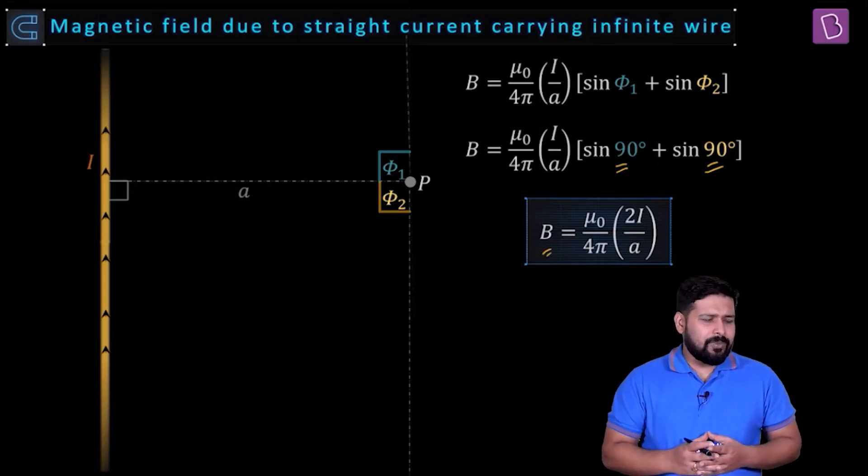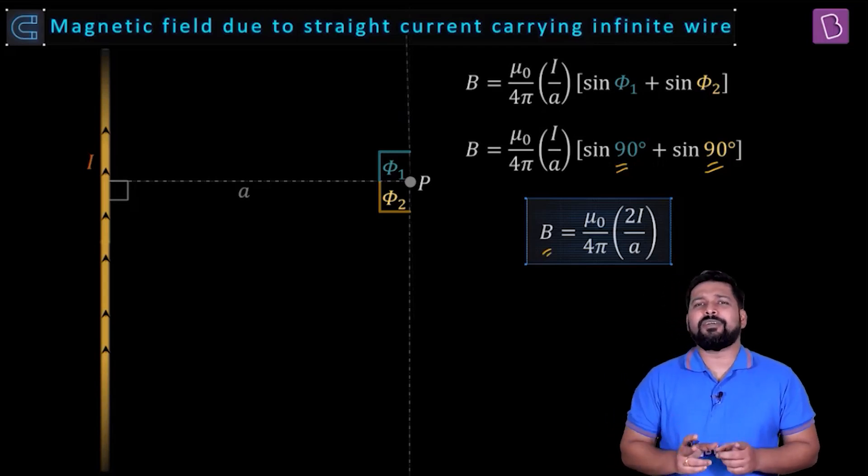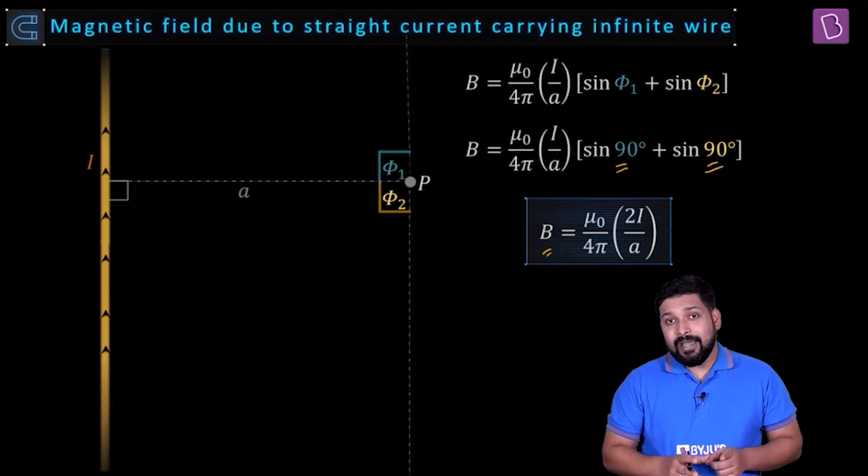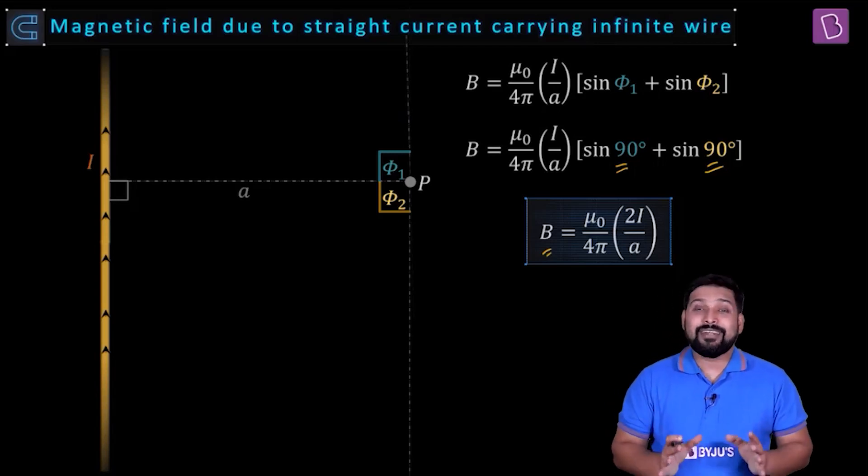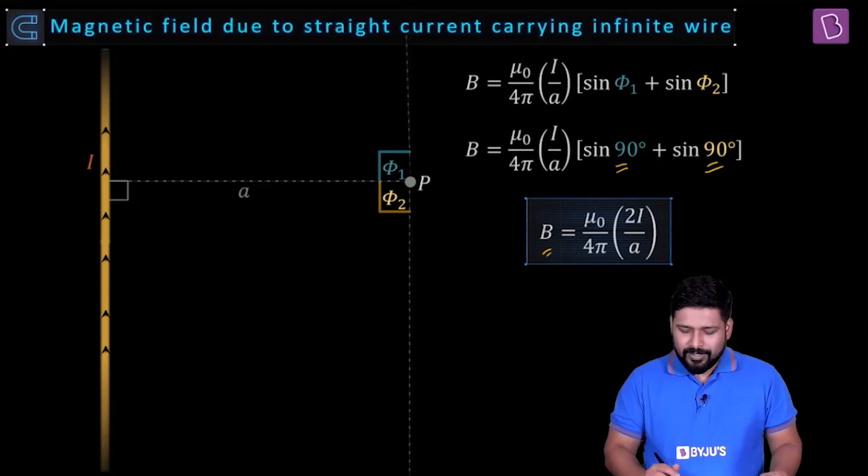This is not a result that you should mug it up. You should just remember the regular result and remember the condition that when it is an infinite wire, then what happens? Phi 1 also becomes equal to 90 and phi 2 also becomes equal to 90.